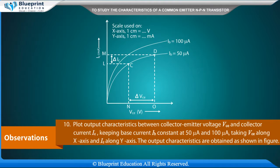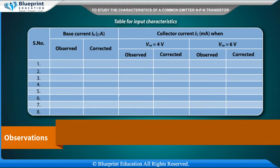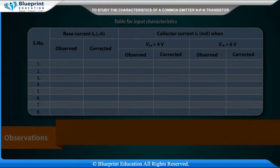The output characteristics are obtained as shown in figure 3. Table for transfer characteristics: Serial number. Base current IB (micro-ampere) — observed, corrected. Collector current IC (milli-ampere) when VCE is equal to 4 volt — observed, corrected. VCE is equal to 6 volt — observed, corrected.